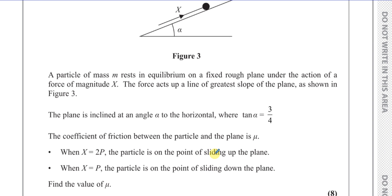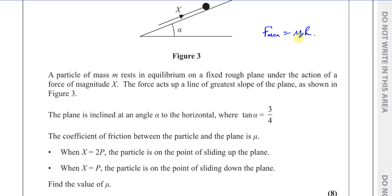In both cases, the maximum value of friction has been achieved because the particle is on the point of sliding. Any greater or lesser force would cause it to start sliding — above 2P it slides up, below P it slides down. Friction always opposes motion until it reaches Fmax, which cannot be exceeded. Fmax equals mu times R, where R is the normal reaction force at the surface of contact.